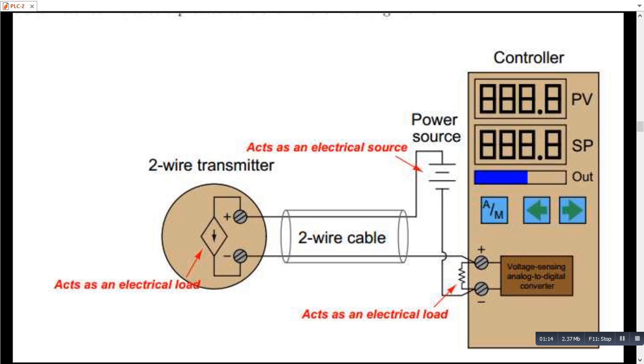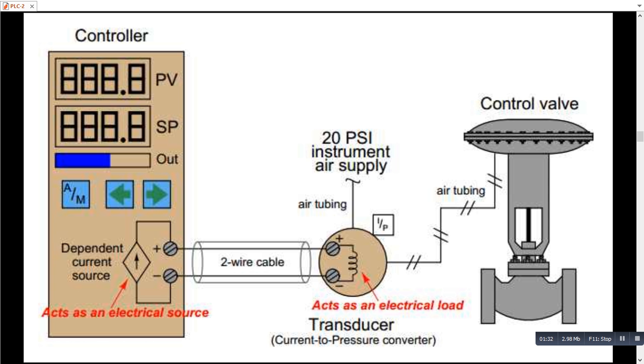So we frequently come across the two wire transmitters. Here we have a two core cable and the power source at the transmitter side. And this is how the analog electronic circuitry works. This is a very common loop.